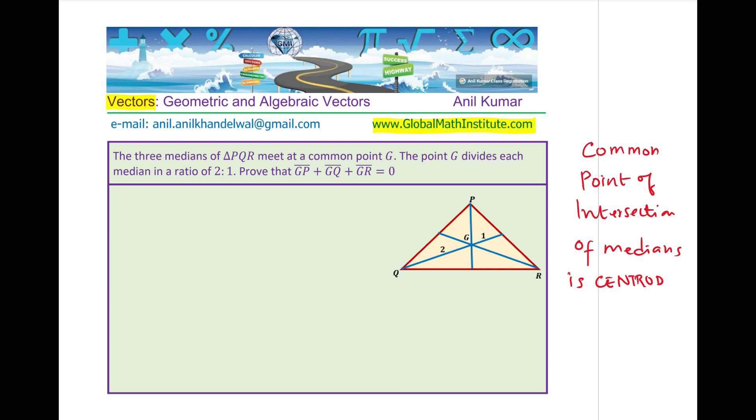This is given to us. We now have to prove that the sum which is G to P, the vector sum G to P plus G to Q plus G to R is equal to 0. That is what we have to prove in this particular question. I would like you to pause the video, answer the question and then look into my suggestions.